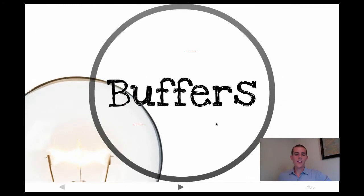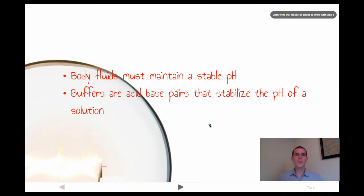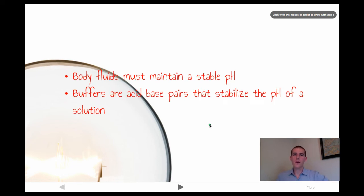Our final topic of the day is buffers. And this, as far as our body is concerned, is where the rubber hits the road. Our body fluids have to maintain a constant pH. If they change very much in any direction, we die. Our blood, for example, has to stay around 7.4 pH. If it goes up to 7.8 or down to 7.0, we die. What a buffer is, is it's an acid-base pair that stabilizes the pH of a solution.